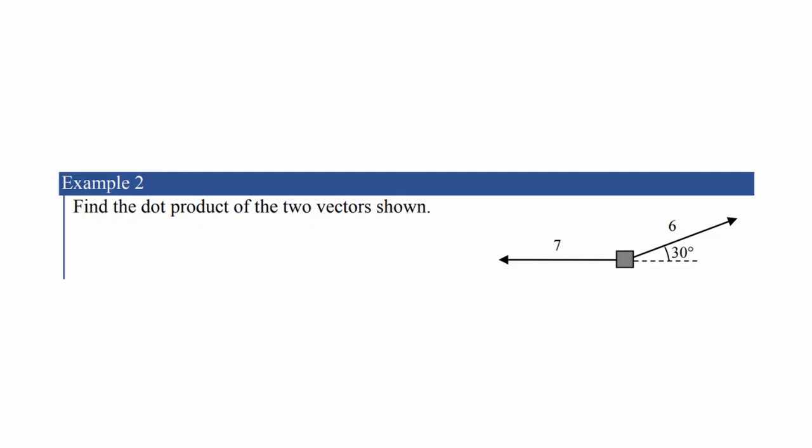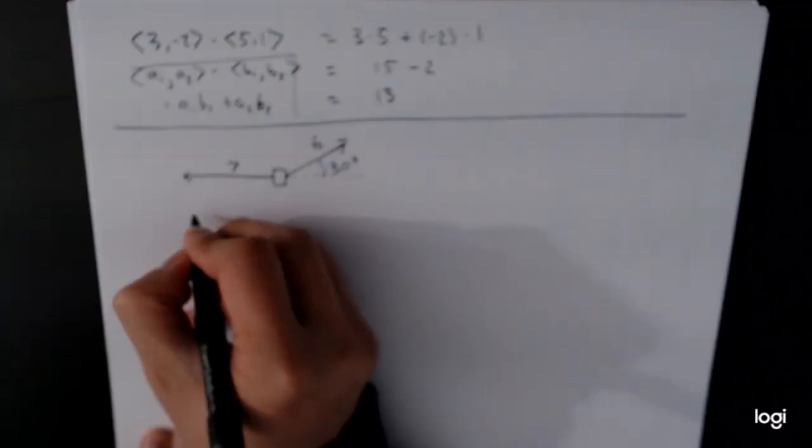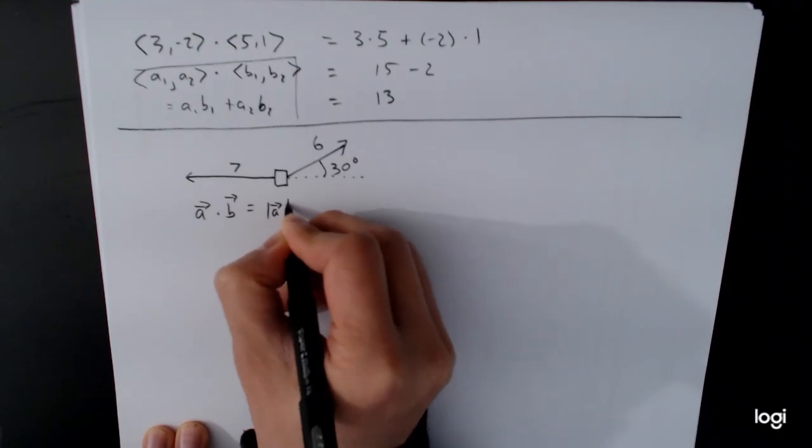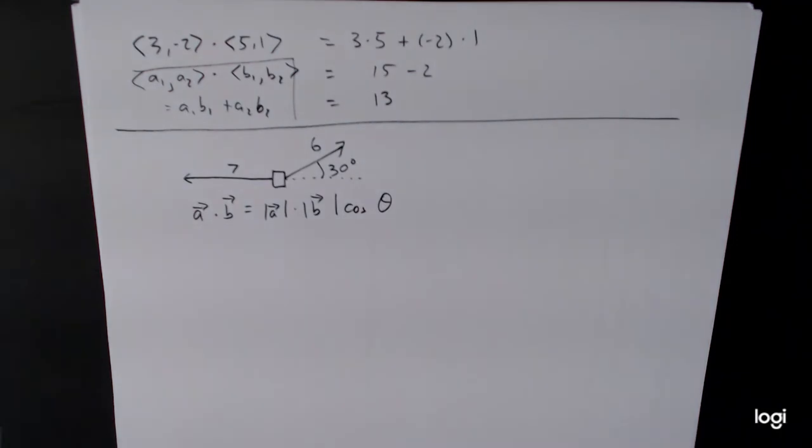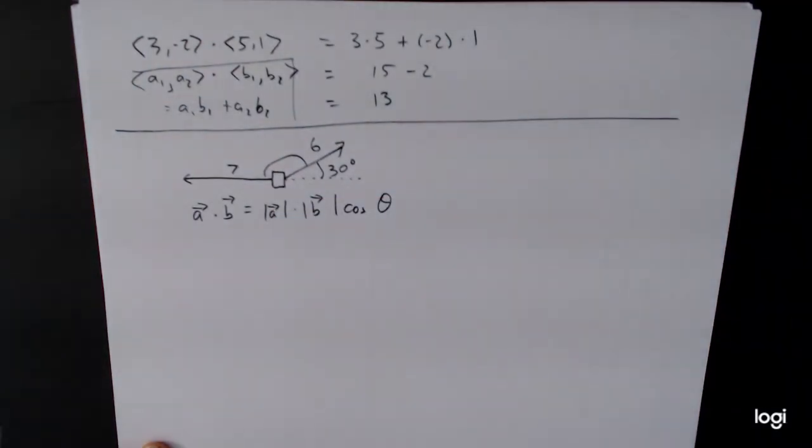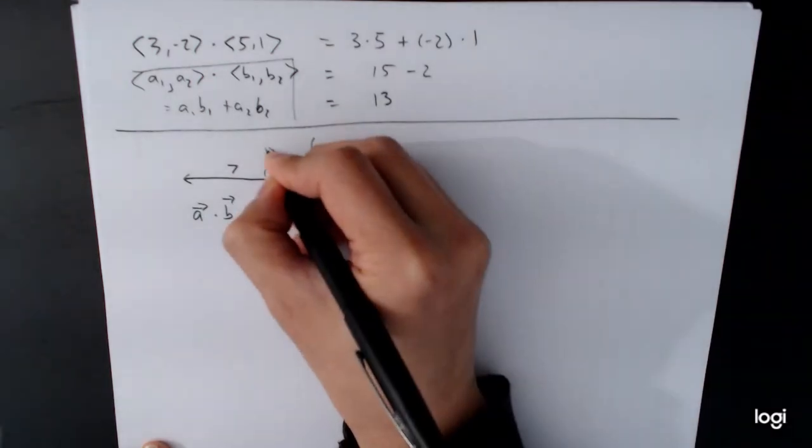Find the dot product of the two vectors shown. Okay well so here we've been given the problem in terms of a geometric presentation, and so we have to use the geometric formula for the dot product. a dot b is equal to the length of a times the length of b times the cosine of the angle between them. Now here's where you just have to be careful. Don't take a look at the number 30 degrees and plug that in as if that is the thing that you're supposed to plug in. Theta is the angle between these two vectors, and so we actually have to figure out what that angle is. Well if this is straight here, that's 180 degrees, and we have to subtract out 30. It gives you 150 degrees.